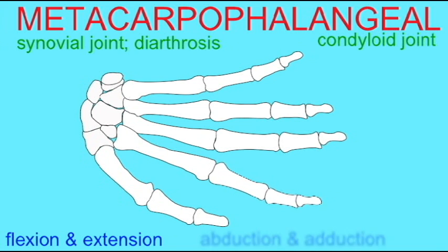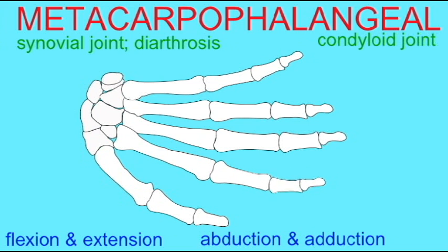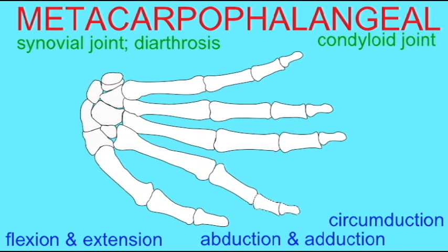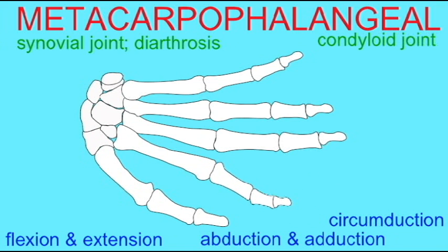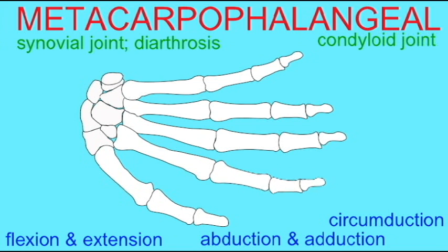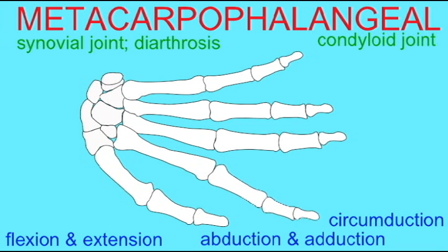At these condyloid joints, flexion and extension is allowed, as well as abduction and adduction. And once one combines the movements of flexion, extension, abduction, and adduction, this also allows for circumduction of the digits at the metacarpophalangeal joints.